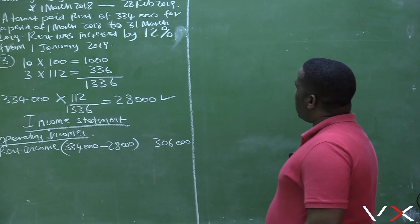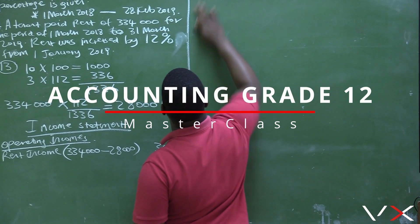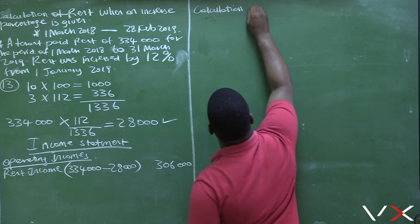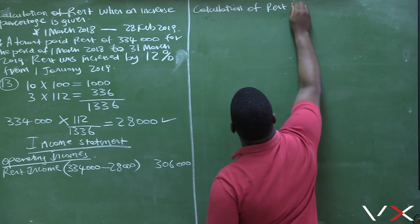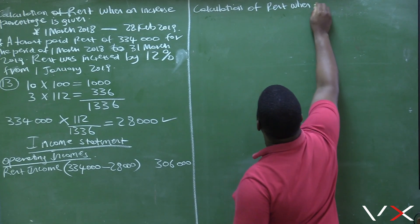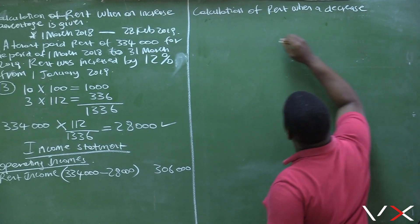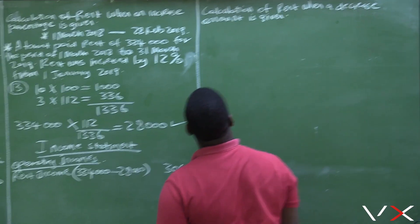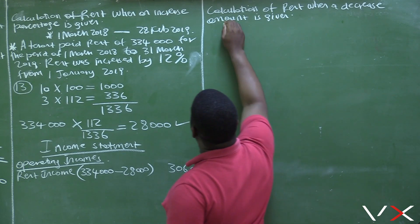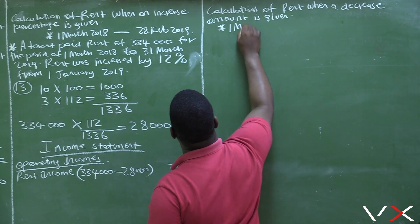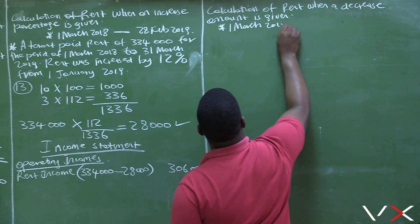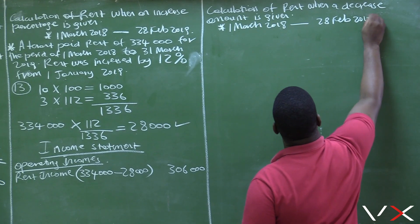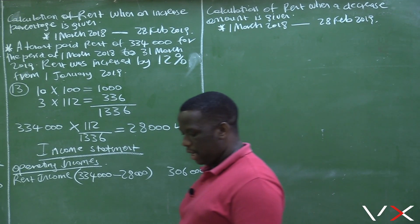We now want to look at the calculation of rent — specifically, the calculation of rent when a decrease amount is given. Our accounting period starts on the 1st of March 2018 up until the 28th of February 2019. It is very important to note the accounting period when you are dealing with adjustments.